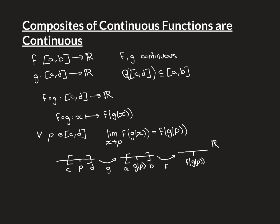Here is a general point p inside that interval. The point p is first mapped by g to g(p). We know g(p) is inside the interval [a, b] because we've already required that anything in [c, d] is mapped onto a real number inside the domain of f — otherwise we can't define f∘g at p.